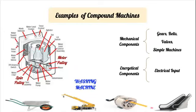Here we have a washing machine. We're not going to analyze the parts of a washing machine too minutely, but it can be observed with this diagram that it is made up of multiple pulleys and screws, which constitute the main simple machines of a washing machine. The energetical components will be the electrical input that helps to start running the machine, while the mechanical components include the gears, belts, bulbs, and the simple machines all together. This is a little bit more complex than the other ones.